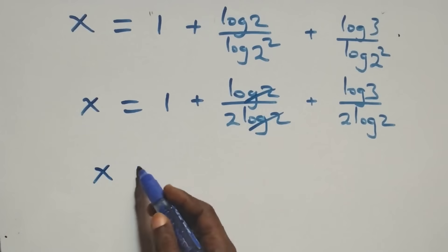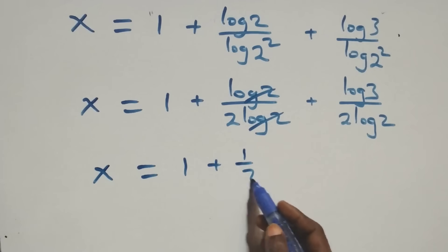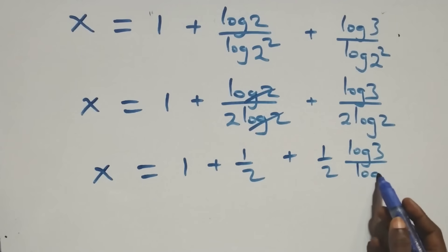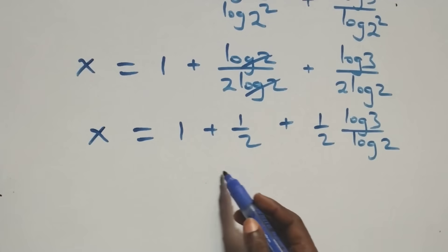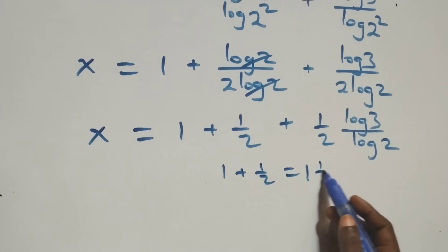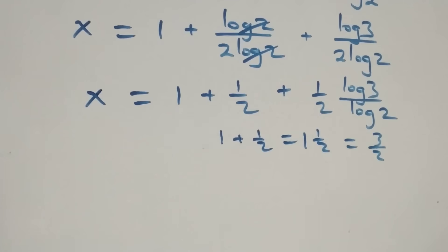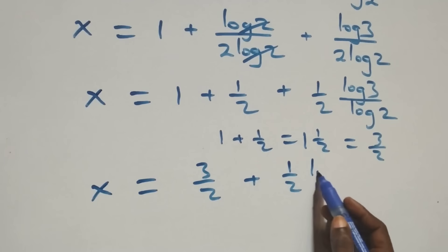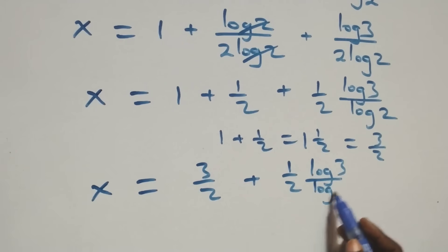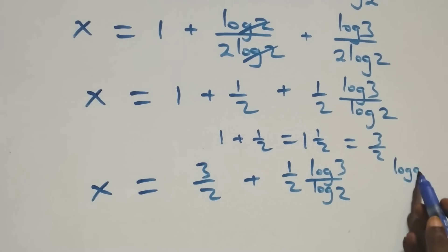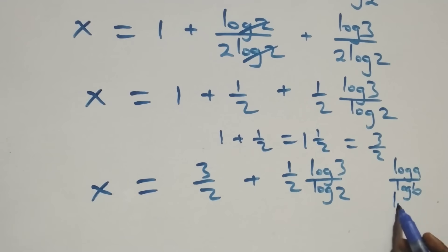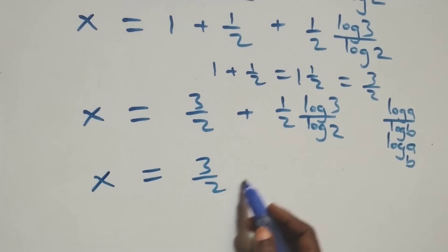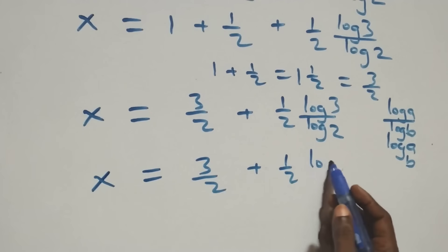We have 1 plus 1 over 2 plus log 3 over 2 log 2, which can be written as 1 plus 1 over 2 plus 1 over 2 times log 3 over log 2. This gives x equals to 3 over 2 plus 1 over 2 times log 3 over log 2. We apply the change of base formula: log a over log b is the same thing as log a to base b. So x equals to 3 over 2 plus 1 over 2 times log 3 base 2.